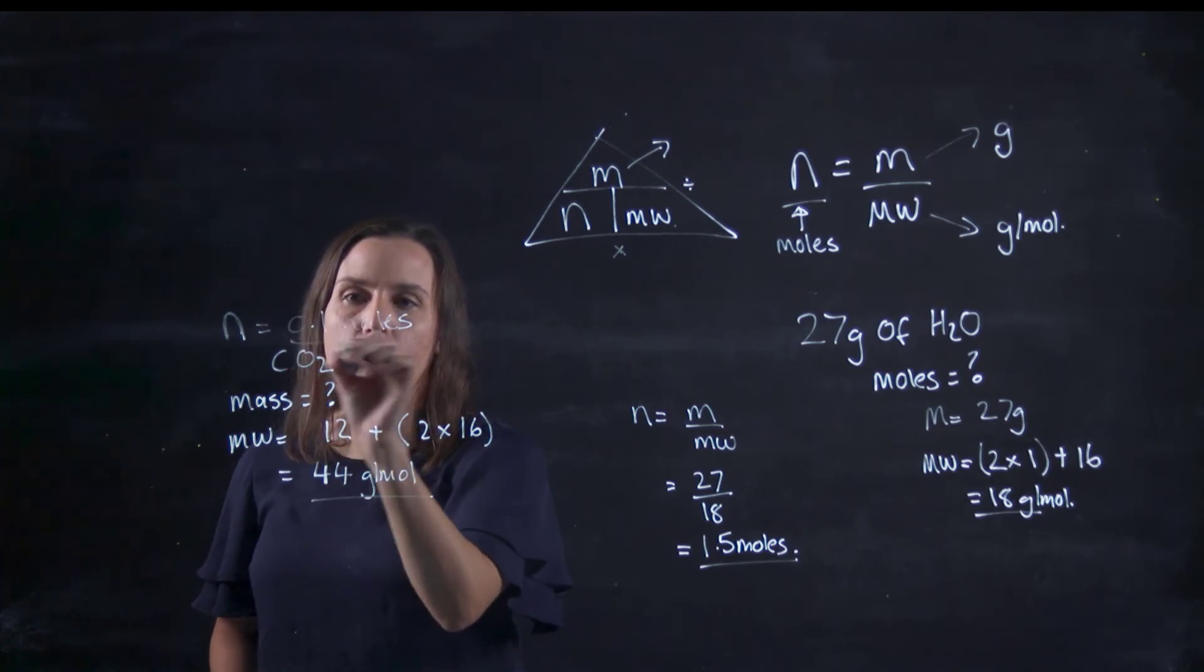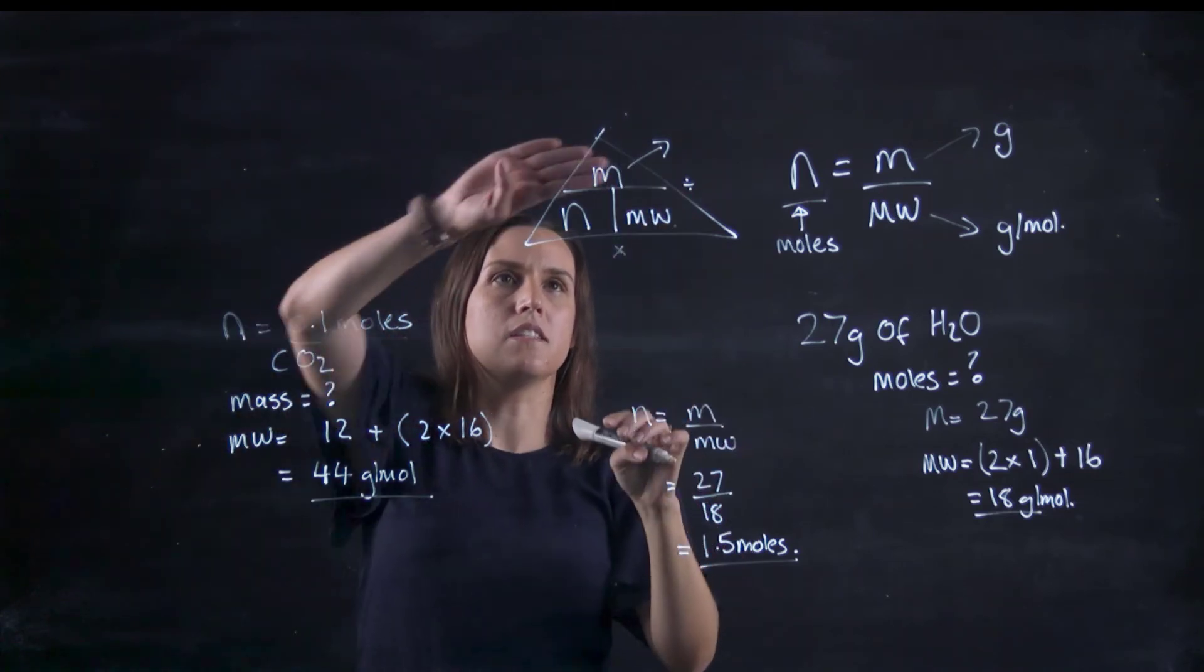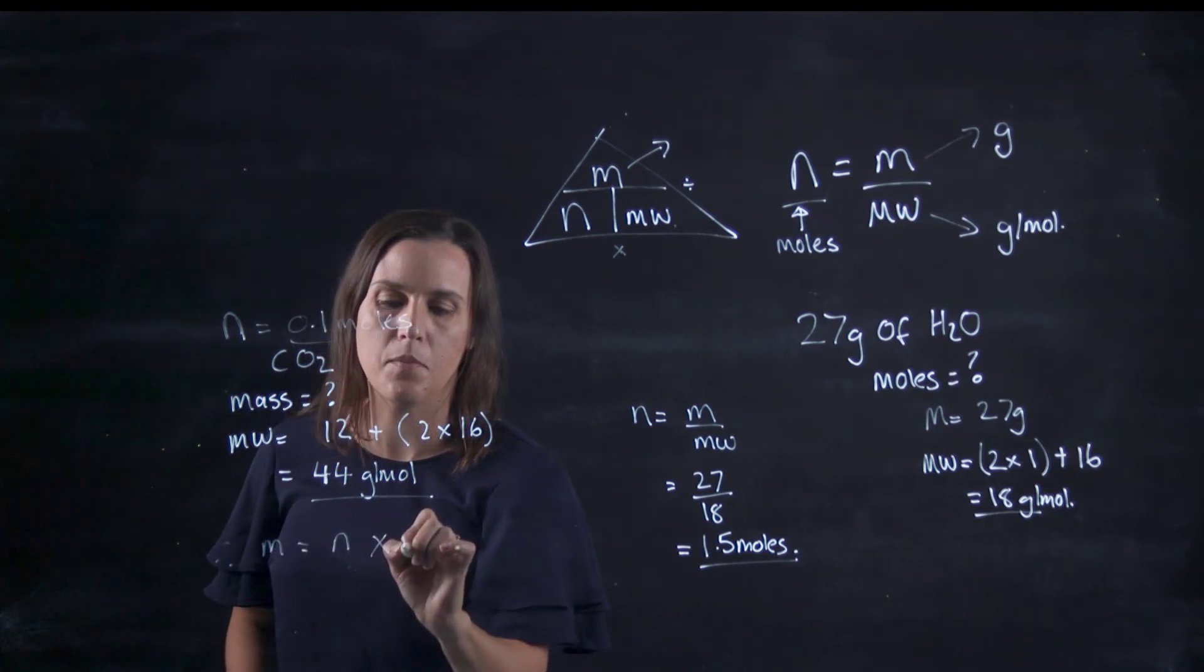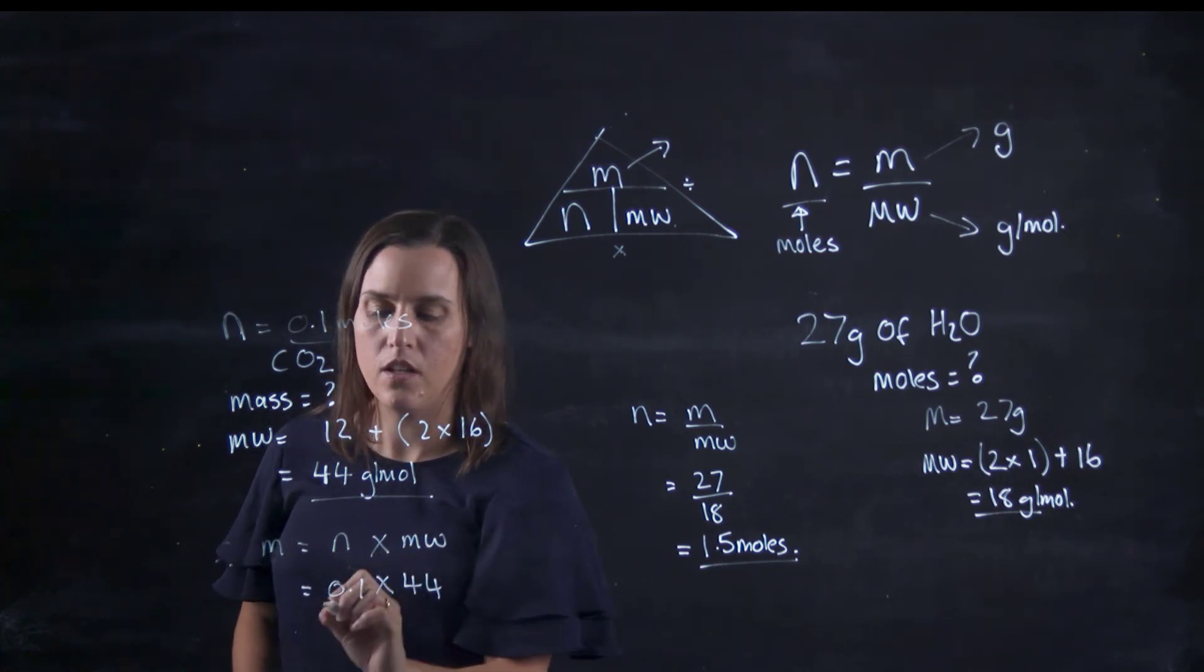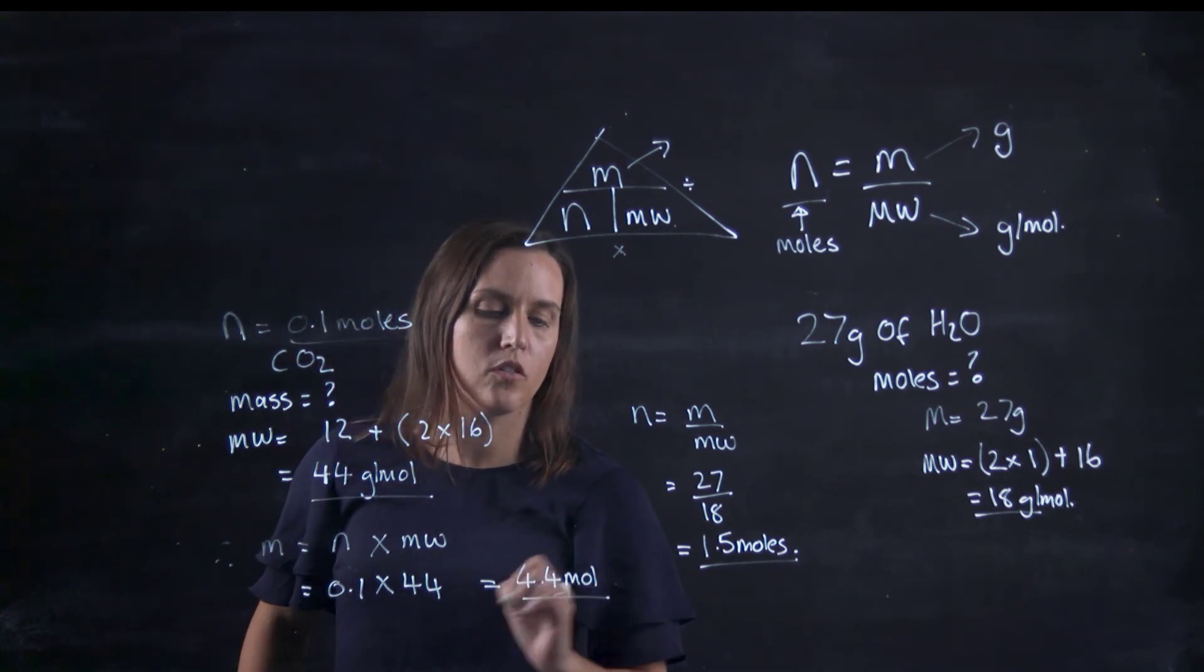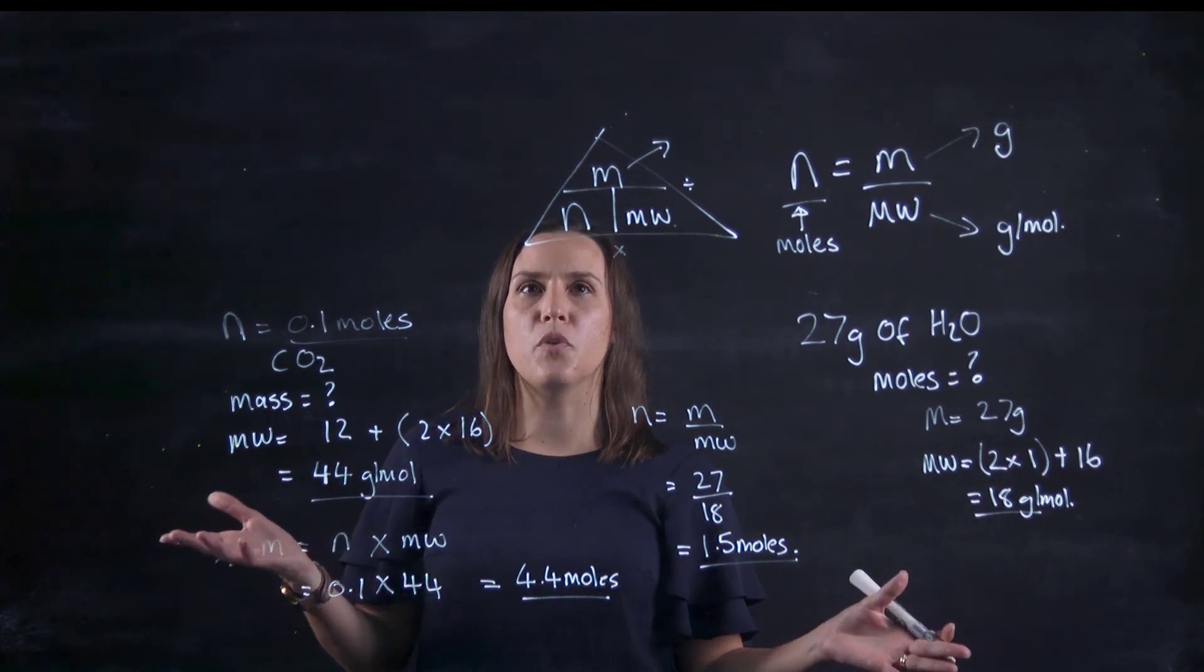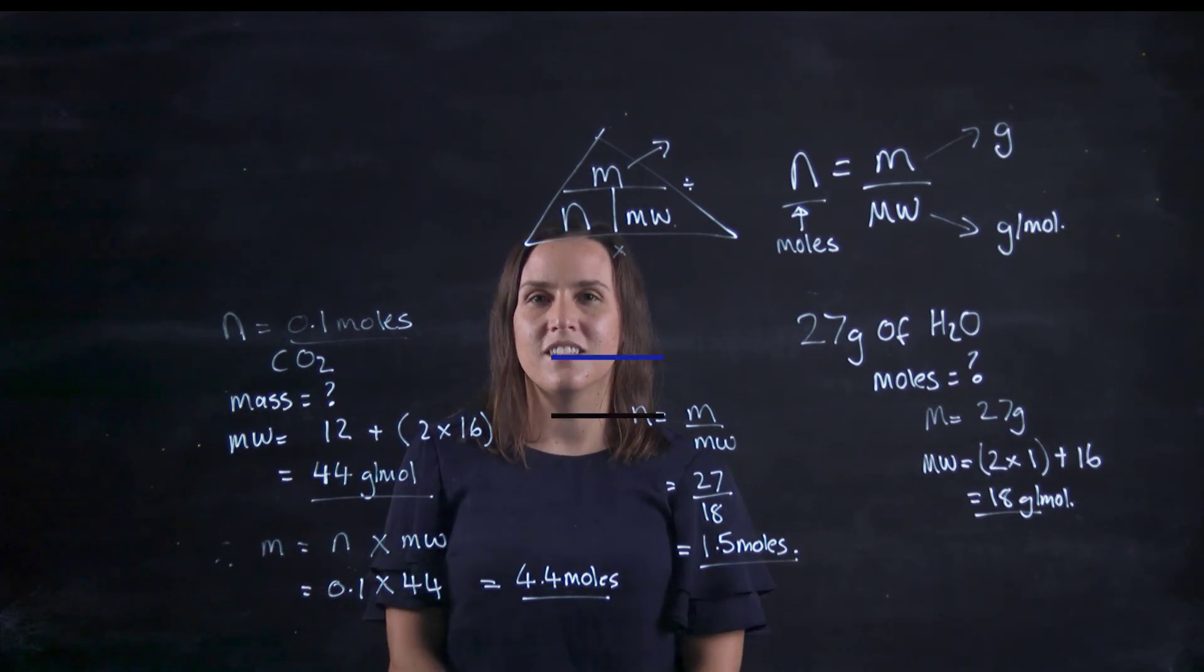I've got my moles, I've got my molecular weight, and I'm finding out my mass. So mass is my moles times my molecular weight. Therefore my mass equals 0.1 times 44, which gives me 4.4 grams. That's very simply how we go between number of moles, mass, and how to work out the molecular weight to put that into the formula. Thank you.